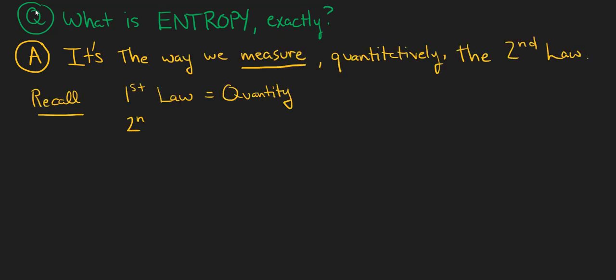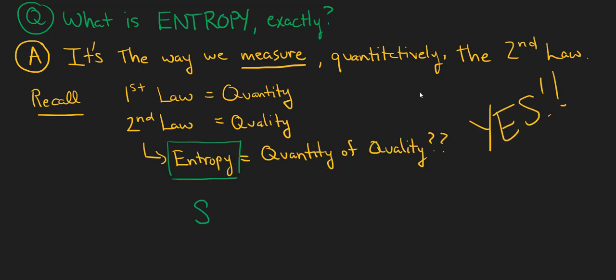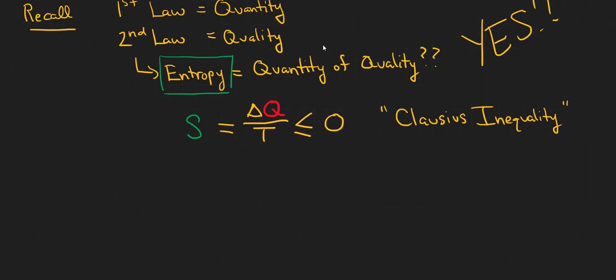So wait, are you saying it's the quantity of quality? Yes, I am. That's exactly right. We see our good friends heat and temperature. We call entropy S when we measure it in practice, and S increases as heat decreases.